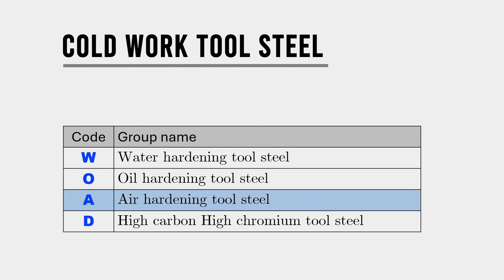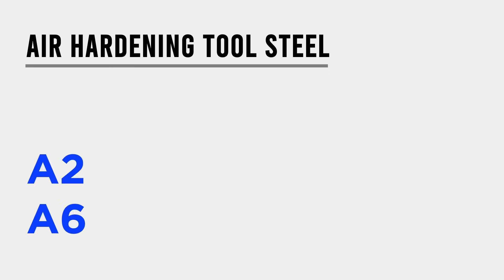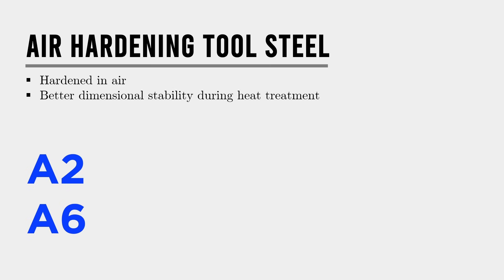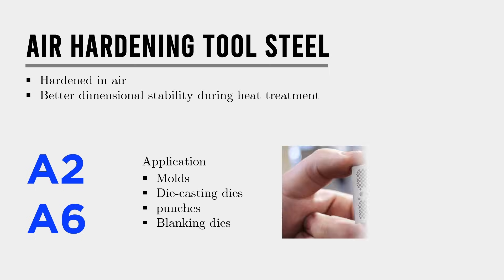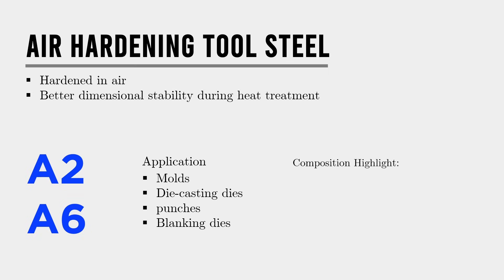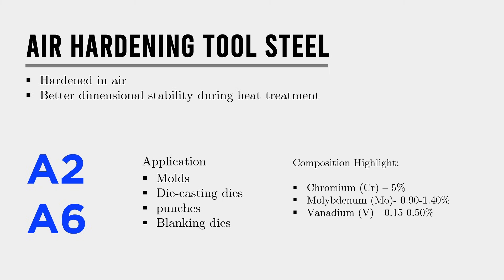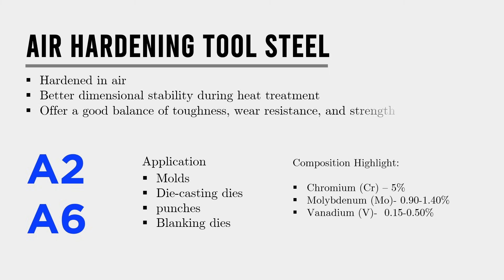The A grade, or air hardening tool steel — popular grades A2 and A6 — are hardened in air, which provides better dimensional stability during heat treatment. They are ideal for tools like molds, die casting dies, punches, and blanking dies, especially where complex shapes and thin edges are involved. They contain high levels of alloying elements such as chromium, molybdenum, and vanadium, offering a good balance of toughness, wear resistance, and strength.